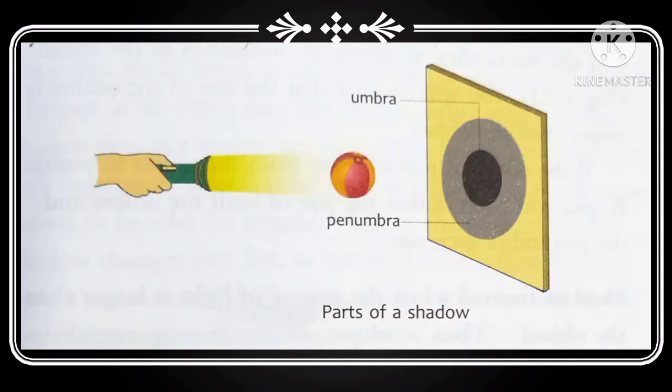Shadow consists of two regions: umbra and penumbra. Umbra is a region of total darkness. A region of total darkness is called umbra. No ray of light enters this region.